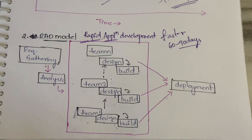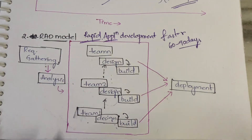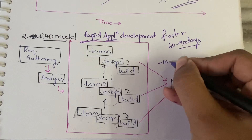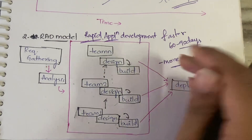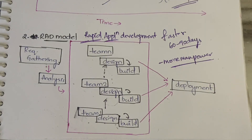This is about the incremental models — don't get confused, incremental and RAD are both subtypes under the incremental category. One correction: in the RAD model, we actually require more manpower, because we are completing the project in a short period of time with multiple parallel teams. Thanks for watching. If you have any doubts, let me know in the comment section and I'll definitely try to clear them. See you in the next video with another topic.